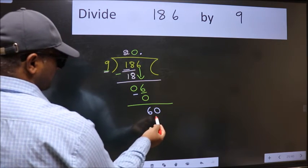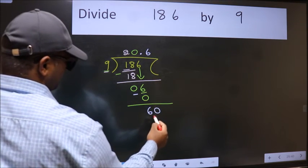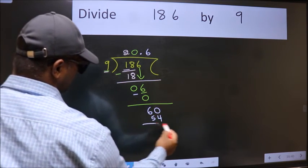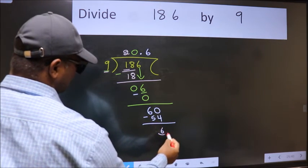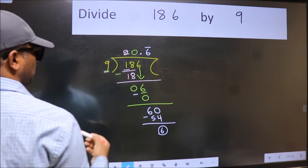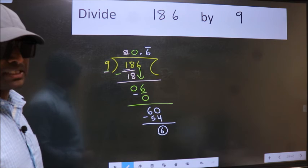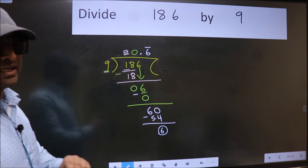So 60. A number close to 60 in 9 table is 9, 6, 54. Now we subtract, we got 6 again. That means we get bar on this number. Did you understand where the mistake happens? You should not do that mistake.